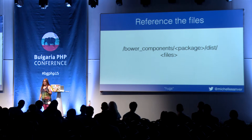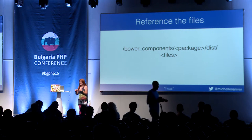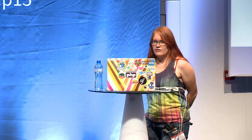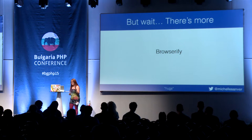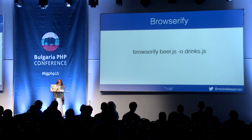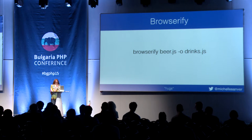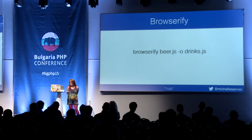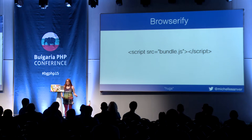But what happens if you need to install two versions of jQuery with really complex dependencies? Bower is a flat structure — you can't have two versions of the same thing. So then you might not want to use Bower. You can use something called Browserify, which is a plugin to NPM. With Browserify, you bundle everything into one bundle and then use that bundle. You use the Browserify command and it will recursively bundle everything — from beer.js to drinks.js, for example — and then you simply use the output bundle.